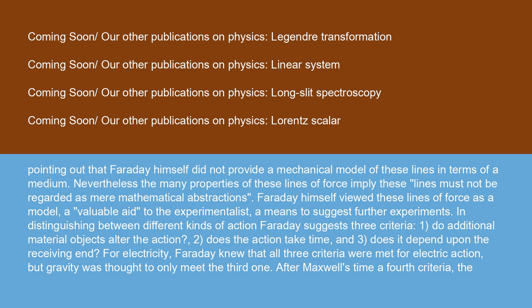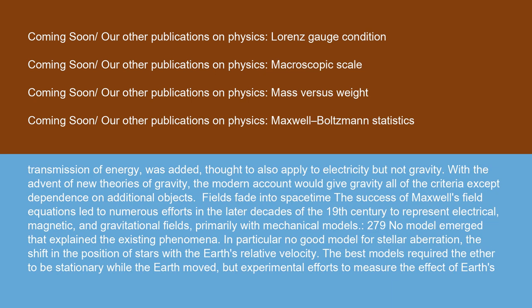In distinguishing between different kinds of action, Faraday suggests three criteria: 1. Do additional material objects alter the action? 2. Does the action take time? And 3. Does it depend upon the receiving end? For electricity, Faraday knew that all three criteria were met for electric action, but gravity was thought to only meet the third one. After Maxwell's time of fourth criteria, the transmission of energy was added, thought to also apply to electricity, but not gravity. With the advent of new theories of gravity, the modern account would give gravity all of the criteria except dependence on additional objects.